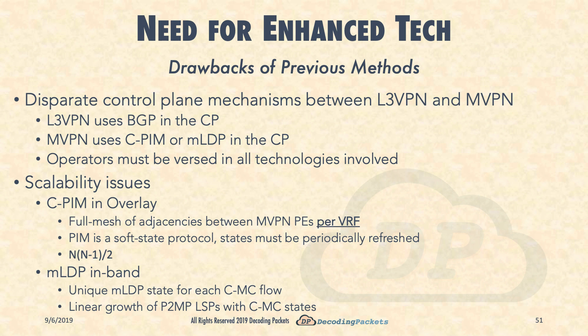Alternatively, in Profile 6/7 when mLDP in-band signaling is used, a unique mLDP state must be created for each C-multicast flow, as flows are mapped to their own unique mLDP multipoint LSPs. This means the LSPs grow linearly with the C-multicast states. Worse still, consider which routers must hold these exploding mLDP states: not only the PE routers, but also the P routers the LSP traverses — that is just how mLDP works. So not only are edge routers affected, but large swaths of the core can be affected as well.